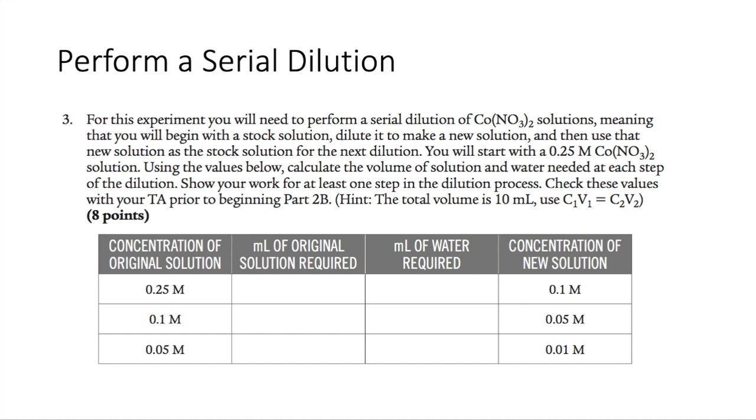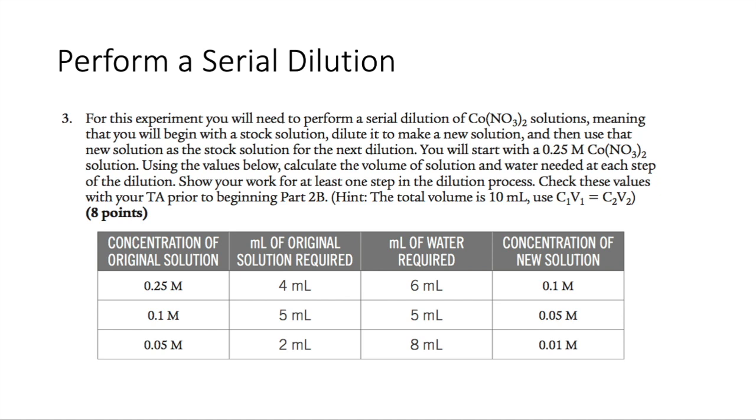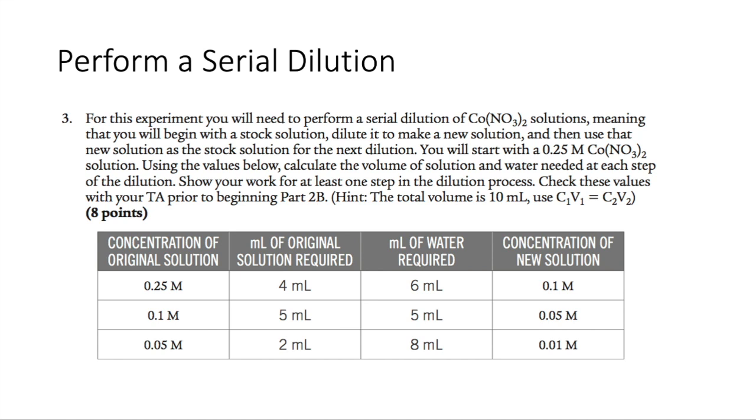In your pre-lab, we ask you to calculate these volumes. And these are the volumes that you should get for your pre-lab. You'll use that C1V1 equals C2V2 equation. So go ahead and check those right now with your TA. You want to make sure that you have this planned out carefully so that when you do the experiment, you don't make a mistake and have to start over.